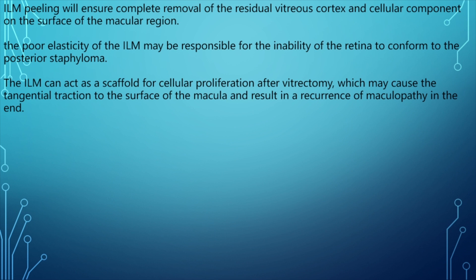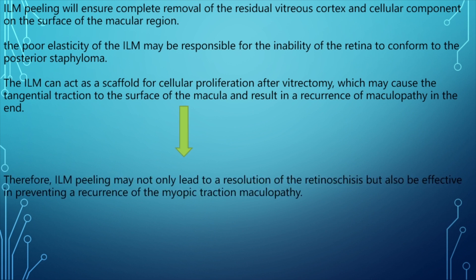ILM peeling ensures complete removal of residual vitreous cortex and cellular components on the surface of the macular region. The poor elasticity of the ILM may be responsible for the retina's inability to conform to the posterior staphyloma, and the ILM can act as a scaffold for cellular proliferation after vitrectomy, causing tangential traction and recurrences of maculopathy. Hence, ILM peeling may not only lead to resolution of retinoschisis but is also effective in preventing recurrence.